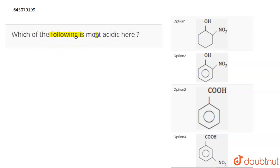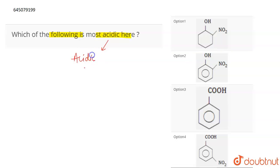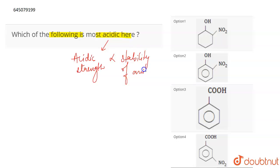The question is: which of the following is the most acidic? Now, if we talk about acidic strength, this depends upon the tendency to lose H+. If the tendency to lose H+ is more, it means that the acidic strength is more. So acidic strength basically depends upon the stability of the anion that is formed.